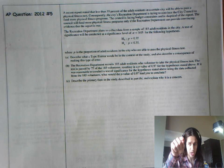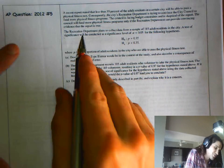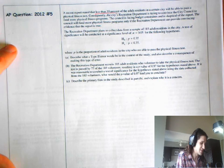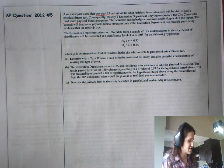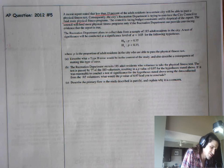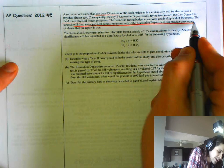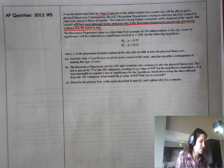Okay, you've unpaused. A recent report stated that less than 35% of the adult residents will be able to pass a physical fitness test. Out of shape. Consequently, they're trying to fund more physical fitness programs. Okay, if we find out that they can't pass the test, maybe we'll get our people in shape or something. They're facing budget constraints, a skeptical report. The council will fund more physical fitness programs only if the recreation department can provide convincing evidence that the report is true.